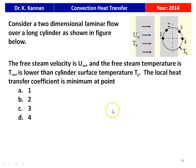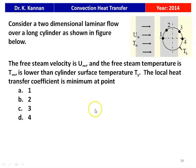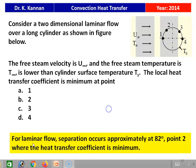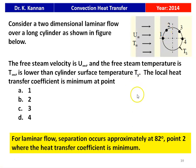Next question from the 2014 paper: consider two-dimensional laminar flow over a long cylinder. The free stream velocity is U∞ and free stream temperature T∞ is lower than the cylinder surface temperature T_s. The local heat transfer coefficient is minimum at which point — 1, 2, 3, or 4? For laminar flow, separation occurs approximately at 82°, where the heat transfer coefficient is minimum. The answer is point 2.